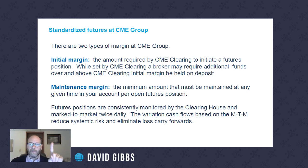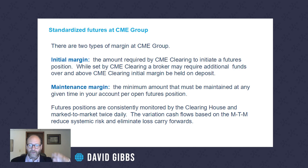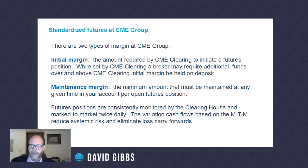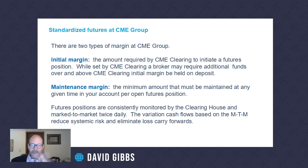In the futures business, margin refers to the amount the clearinghouse determines is required to hold an open position — generally a fraction of the notional amount, traditionally between five and fifteen percent. Some products like cryptocurrencies require a much higher margin because they're deemed to have a higher level of risk. Always consult your broker about margins on futures.